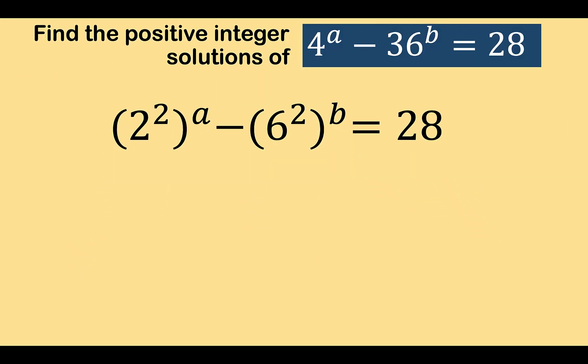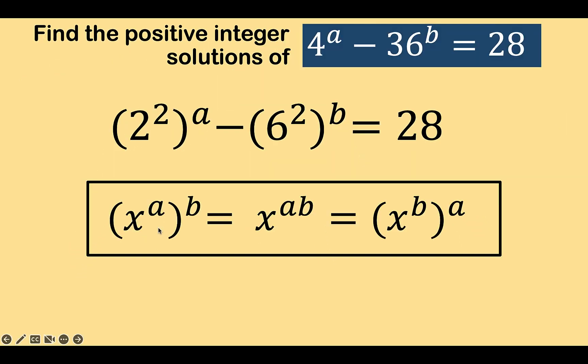Now, let's recall some laws of exponents. If we have the quantity x raised to a all raised to b, we can apply the power of power rule of exponents to get x raised to a times b. We simply multiplied a times b.